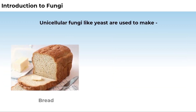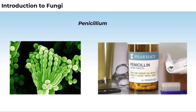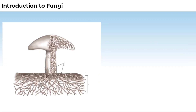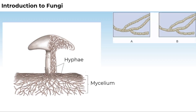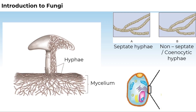Some unicellular fungi, for example yeast, are used to make bread and beer. Some are the source of antibiotics, for example Penicillium. Fungi are filamentous; their bodies consist of long, slender, thread-like structures called hyphae. The network of hyphae is known as mycelium. Some hyphae have septa or cross walls, while others are continuous tubes filled with multinucleated cytoplasm, called coenocytic hyphae. The cell walls of fungi are composed of chitin and polysaccharides.